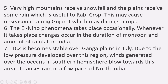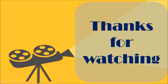Western disturbances may also cause unseasonal rain in Gujarat, which may damage crops. The El Niño phenomenon takes place occasionally; whenever it takes place, changes occur in the duration of monsoons and amount of rainfall in India. The ITCZ becomes stable over the Gangetic plains in July due to the low pressure developed over this region. Winds generated over the oceans in the southern hemisphere blow towards this area, causing rain in a few parts of north India.